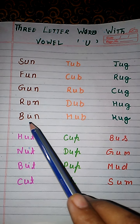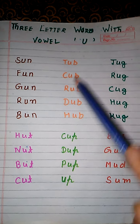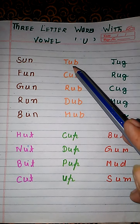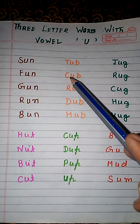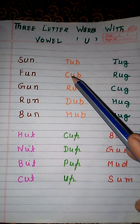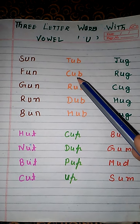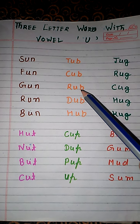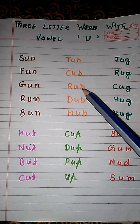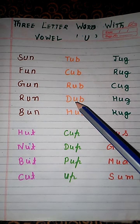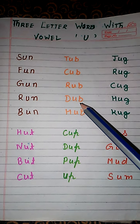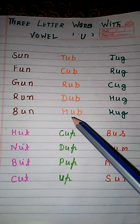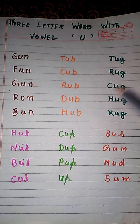B, U, N. Bun. T, U, G. K, U, B. Hub. R, U, G. R, U, B. Dub. H, U, B. Hub.